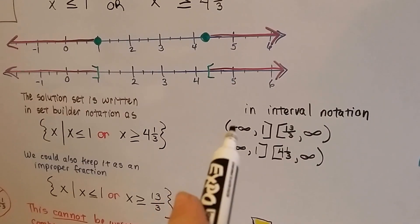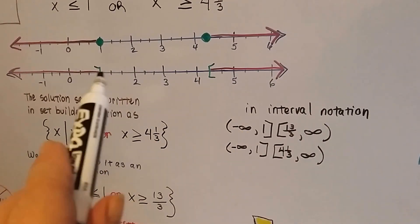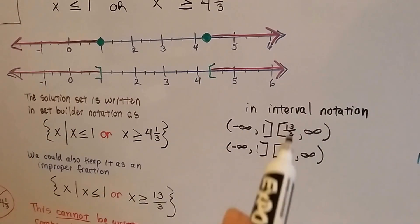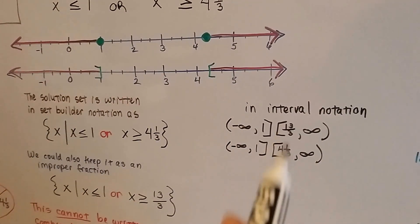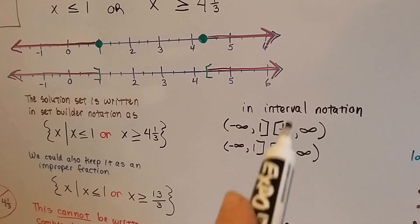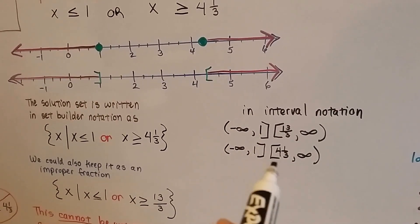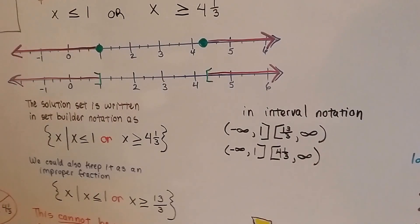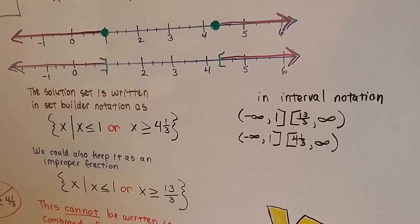So we'd have negative infinity comma one, because that's where it's included. Or, whether you want it as a fraction or simplified, it would be this way with a comma in the bracket on that side, with the infinity for positive and then the parentheses.